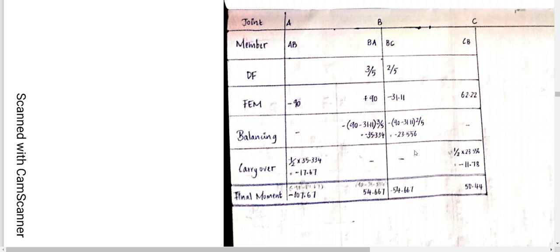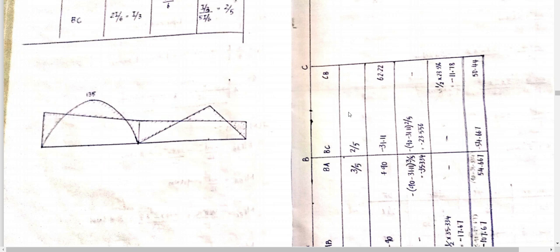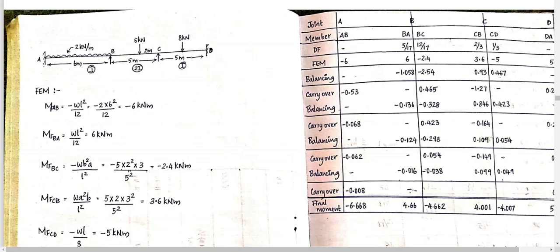In this question we will have 4 to 5 iterations to converge to the correct values. These give us the final moments MAB, MBA, MBC, and MCB. Finally, we draw the bending moment diagram from these final moment values. The remaining questions will be covered in the next part.